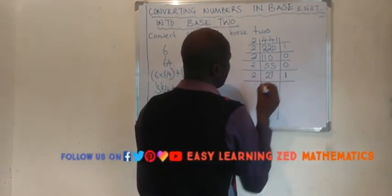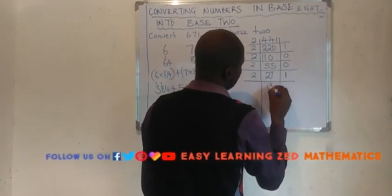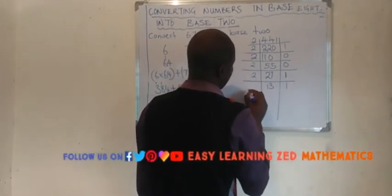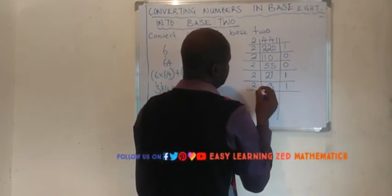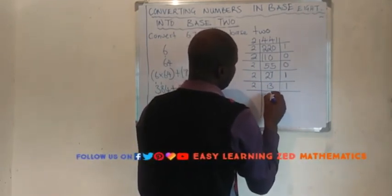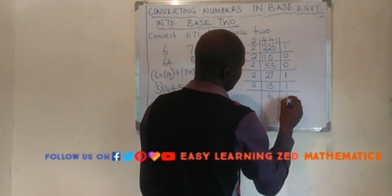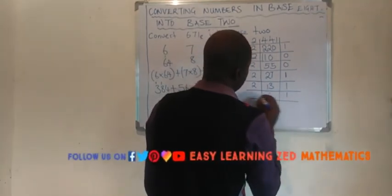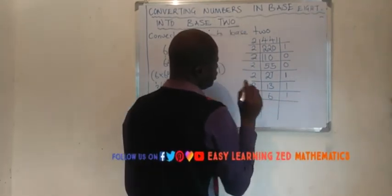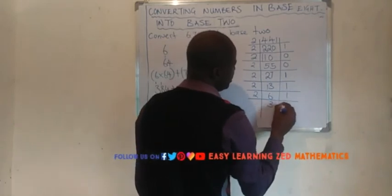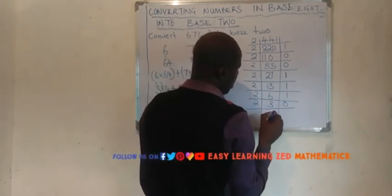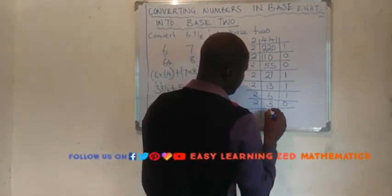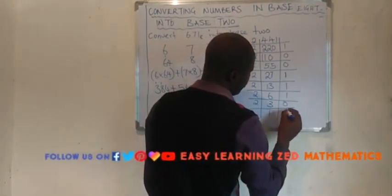27 divided by 2 will give us 13 remainder 1. 13 divided by 2 will give us 6 remainder 1. 6 divided by 2 will give us 3 remainder 0. 3 divided by 2 will give us 1 remainder 1.